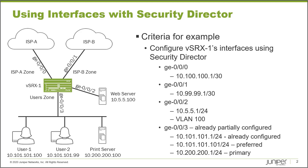For the configuration criteria: GigE0/0/0 needs an IP address of 10.100.100.1/30, and GigE0/0/1 needs 10.99.99.1/30. Remember, GigE0/0/0 and GigE0/0/1 connect to ISPA and ISPB respectively.